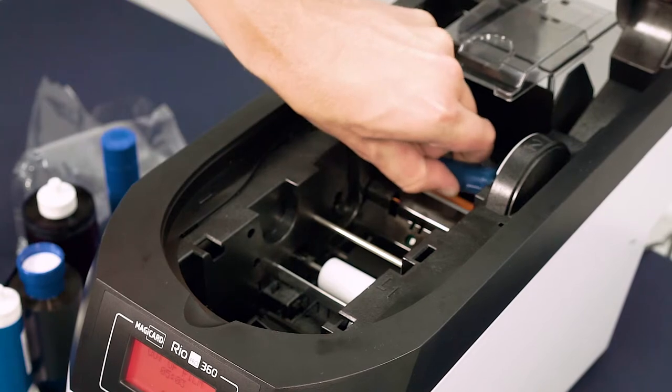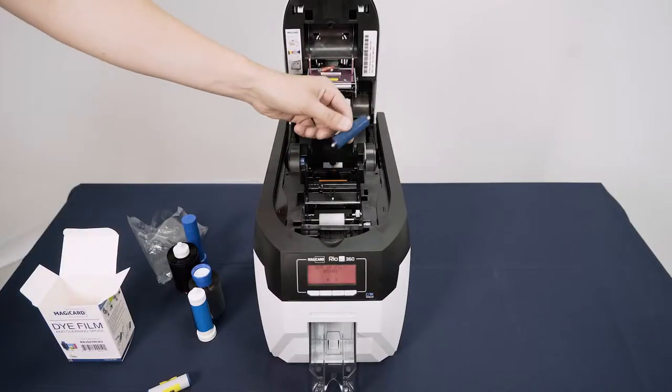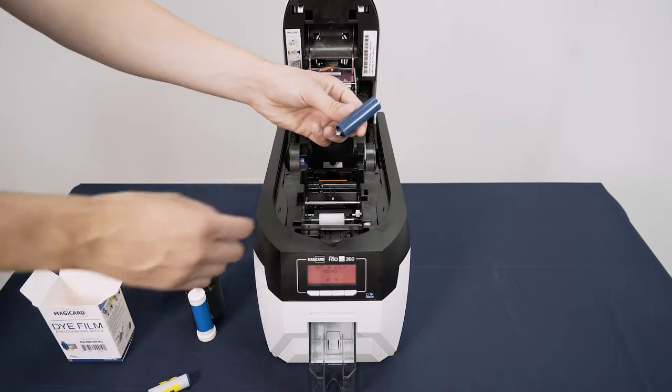Before fitting the new die film you will need to remove the used tacky cleaning roller from the rear of the printer and remove the metal bar.